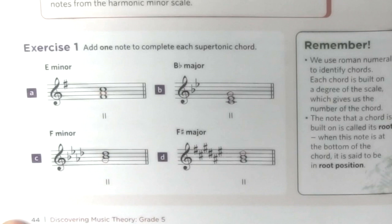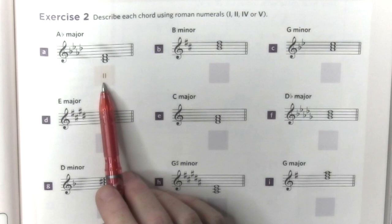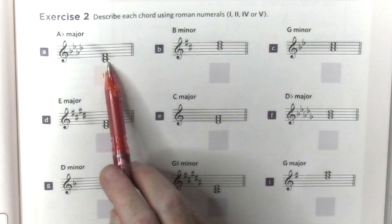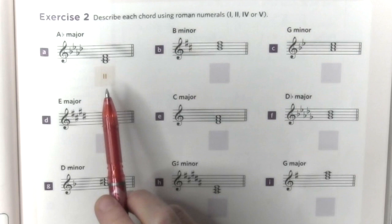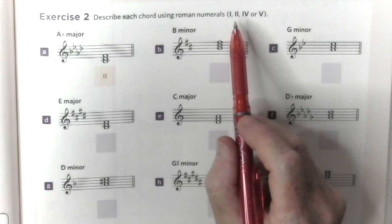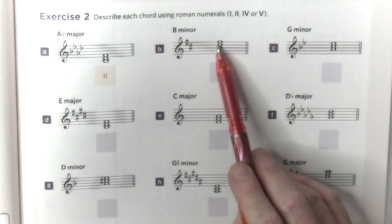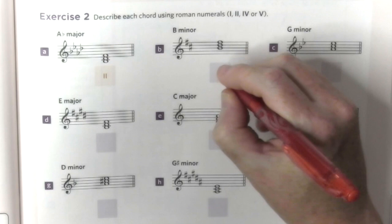In exercise 2, we need to describe the chords with the Roman numeral. In A-flat major, the bottom note is B-flat, so it's the second degree. We have the main chords as options: first, second, fourth, and fifth, because these chords form the main cadences. In B minor, B is the bottom note, so it's the first degree. In G minor, A is the second degree, therefore second.